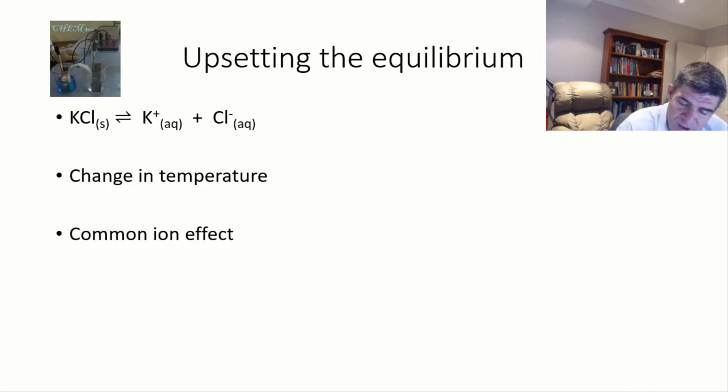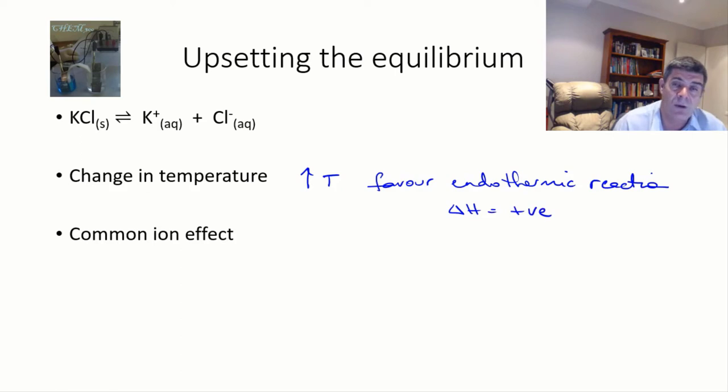So the first thing that we can always do is change the temperature. We know that an increase in temperature is going to favor the endothermic reaction, and that's the one that has the positive delta H value. And likewise, a drop in temperature is going to favor the exothermic or negative delta H value.